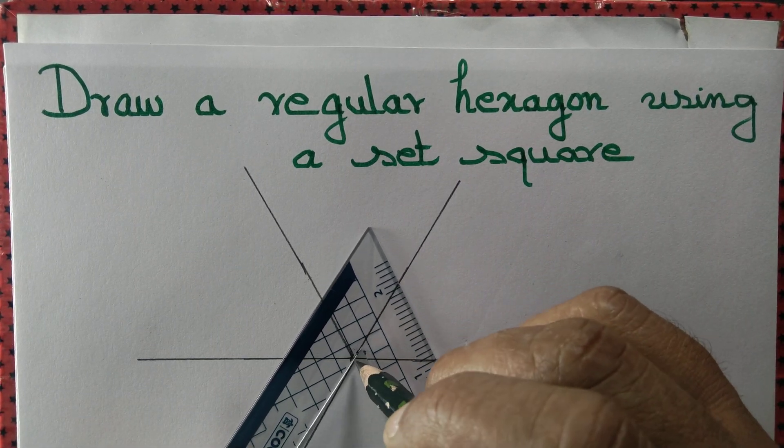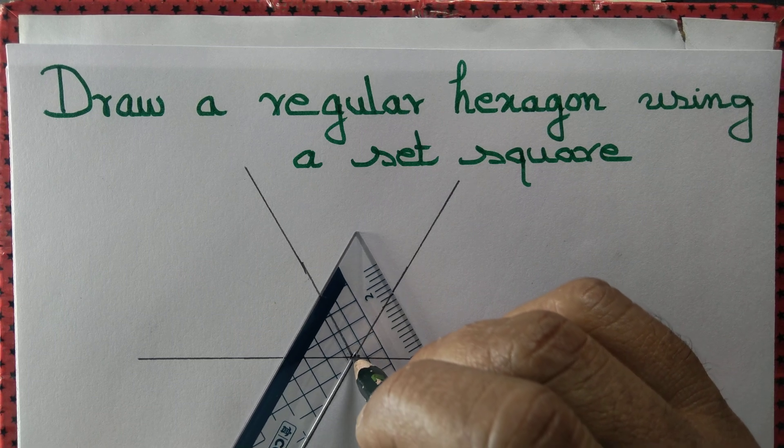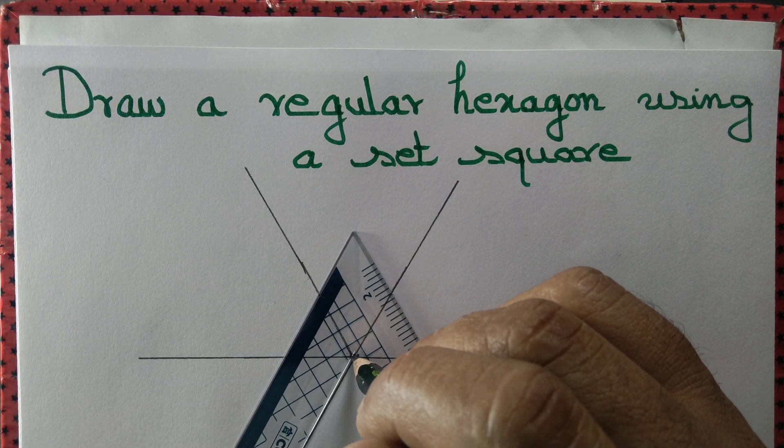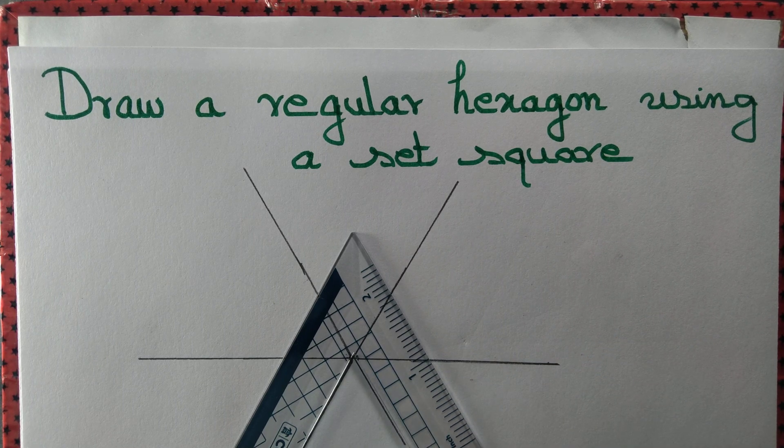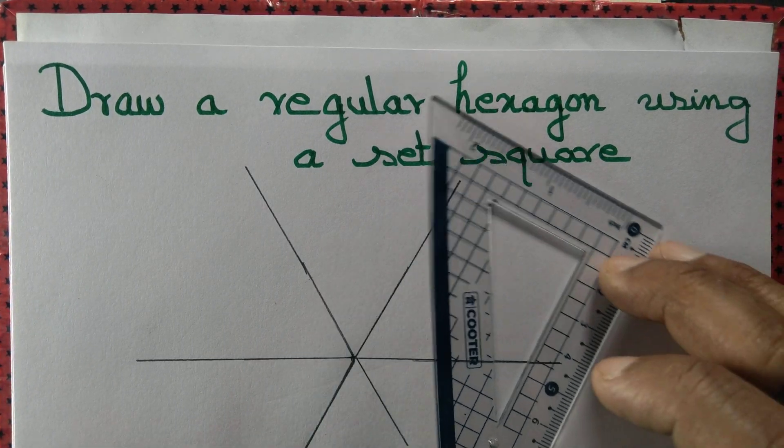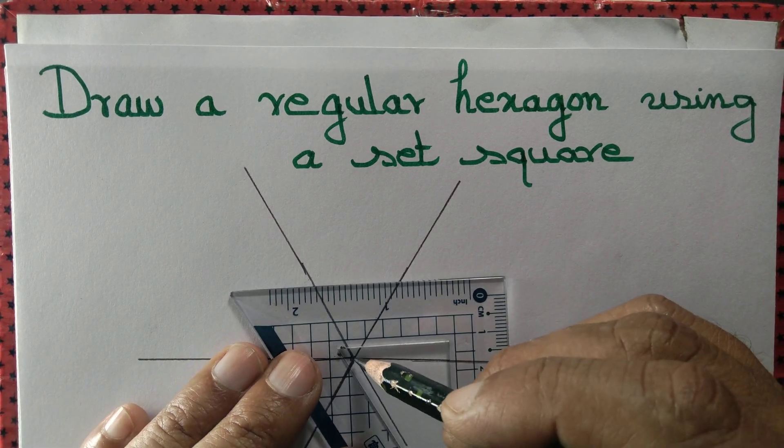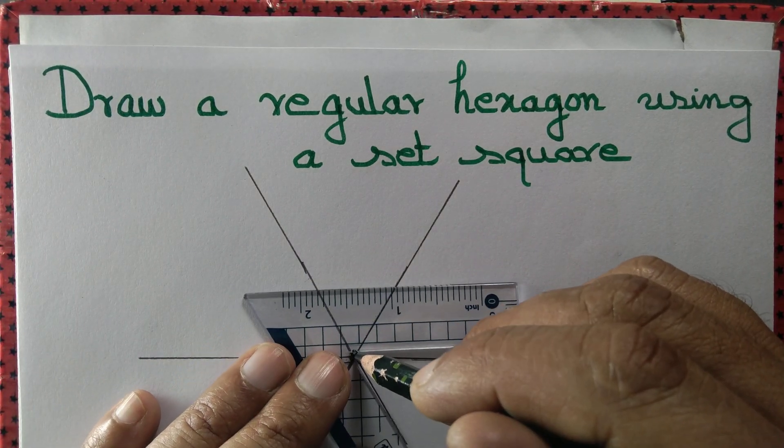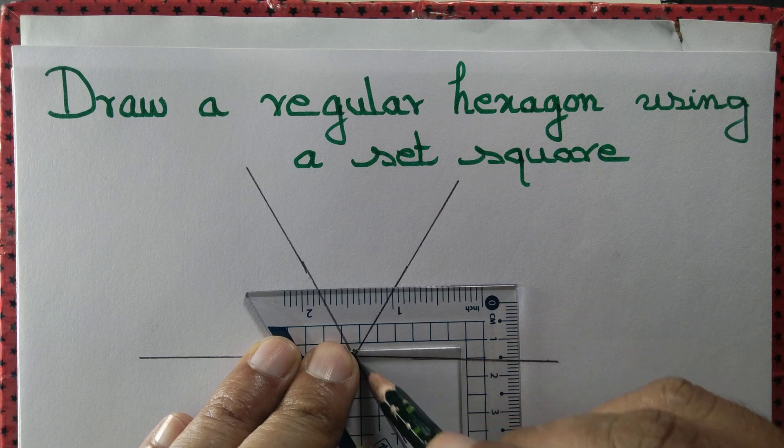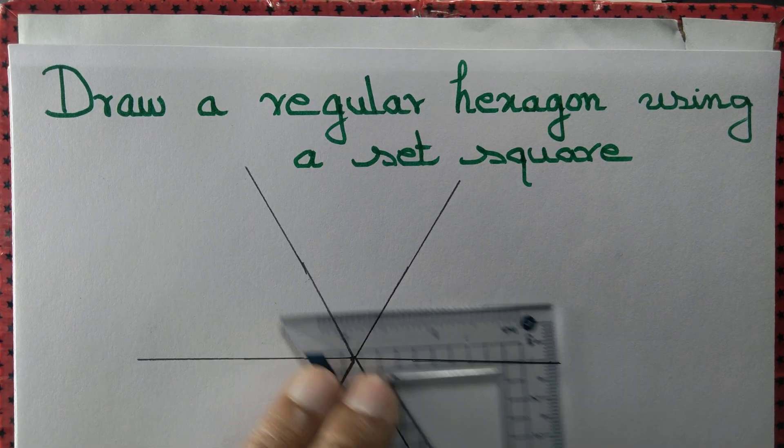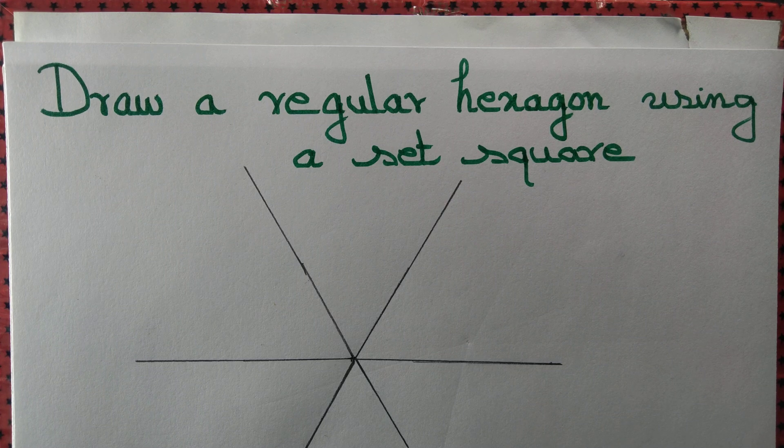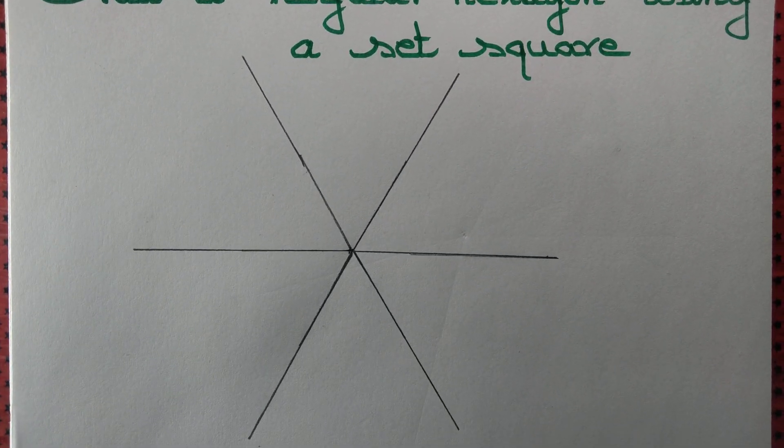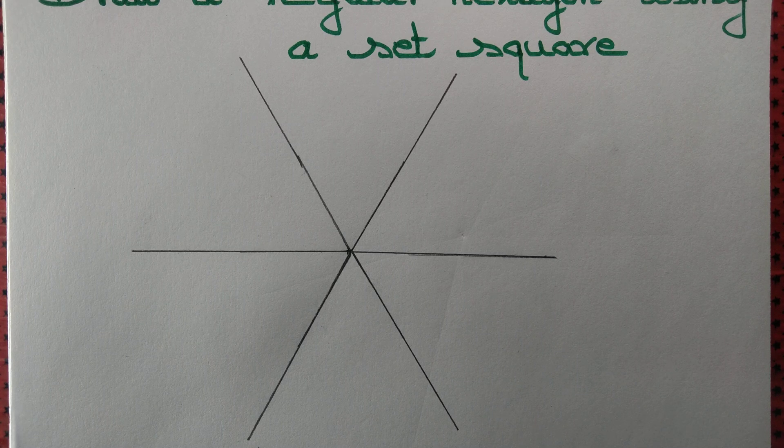We draw another angle that measures 60 degrees. In total, we have drawn 6 angles that measure 60 degrees each.